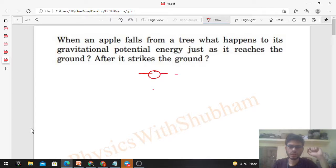When an apple falls, it has some gravitational potential energy at some height, right? When it is above the ground, it has potential energy which is gravitational potential energy. Then what will happen? Its potential energy will decrease.